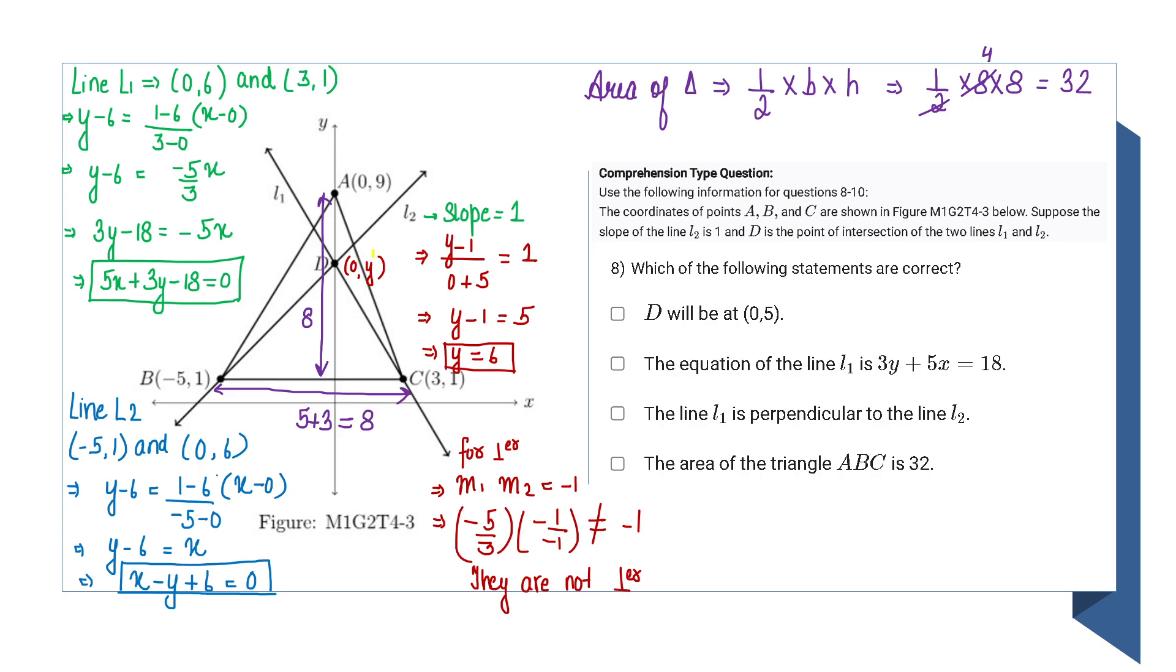Since I've been given that the slope of L2 is 1 and D lies on the y-axis, the x-coordinate will be 0. I have one point on L2 that is D, and another point is B. I will write the slope using these two points: that will be (y-1) divided by (0 - (-5)), and that slope needs to be equal to 1.